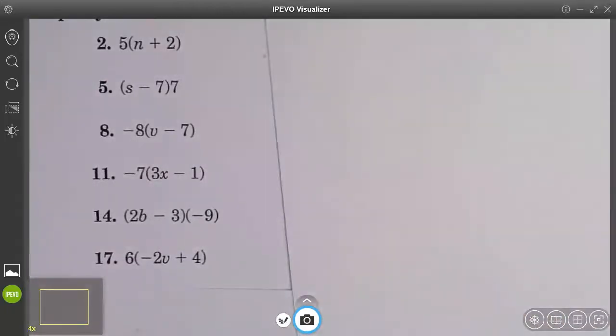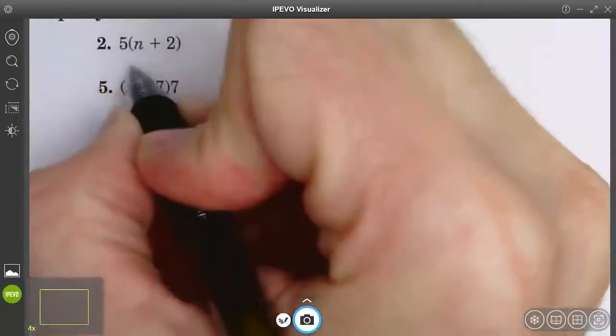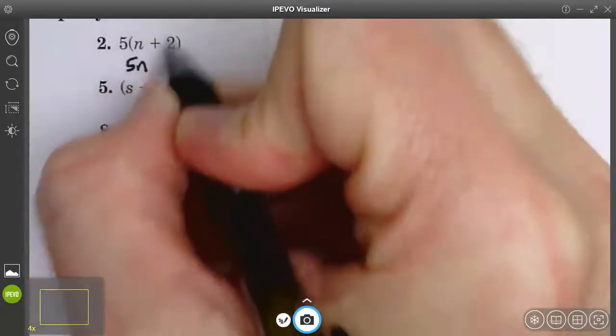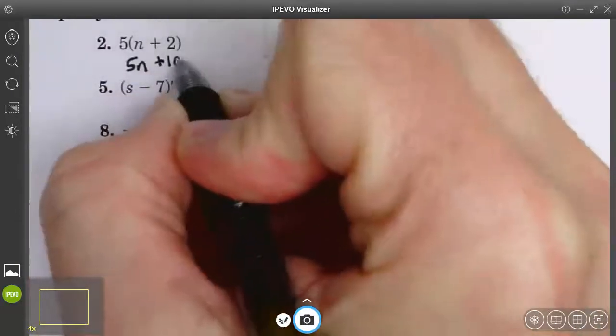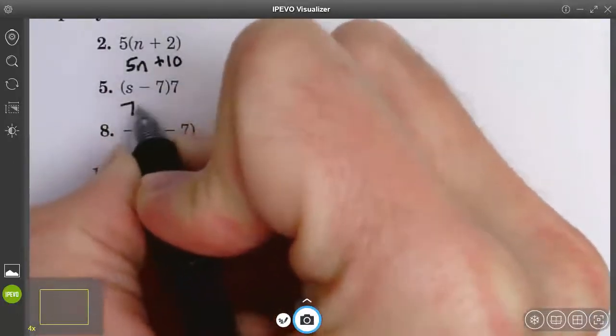Here are our next six. This is a spot to pause. 5 times n is 5n. 5 times 2 is 10. 7 times s is 7s.